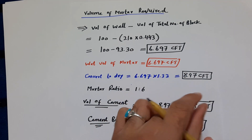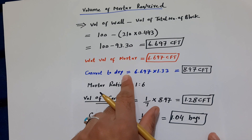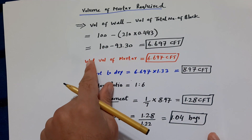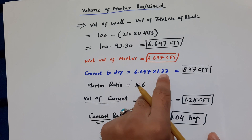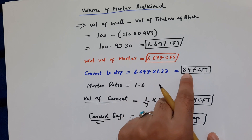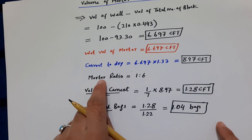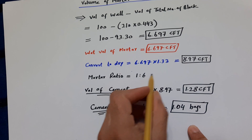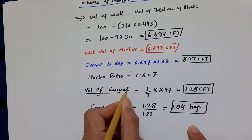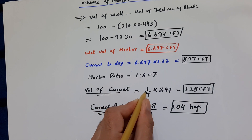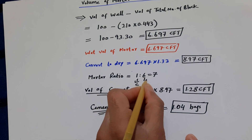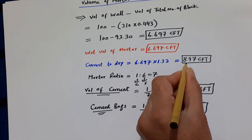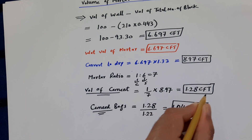We now convert the wet volume to dry volume, because we bring dry materials from the market. The dry volume increases by 33% of the wet volume. So 6.697 × 1.33 = 8.97 cft dry volume. The mortar mix ratio is 1:6, where 1 part is cement and 6 parts is sand, giving a sum of ratio of 7. The volume of cement = (1 ÷ 7) × 8.97 = 1.28 cft.